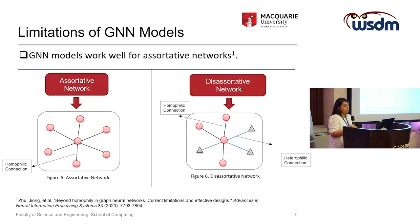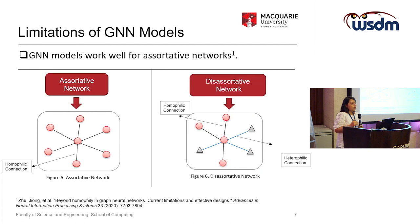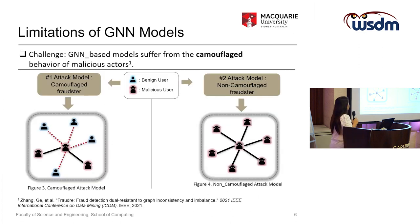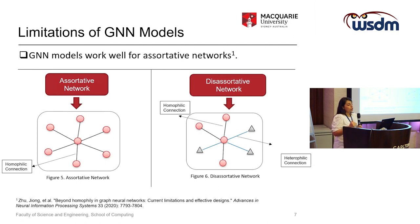In addition, based on previous study in the literature, GNN models work well for assortative types of networks. In assortative networks, nodes in the neighborhood belong to the same class labels, and we have homophilic connections in the graph. In contrast, in disassortative networks, nodes belong to different class labels, so we have a combination of homophilic and heterophilic connections. The camouflage behavior of malicious actors creates this disassortativity in the networks, which is why the performance of GNN models can be hindered significantly during the aggregation process.